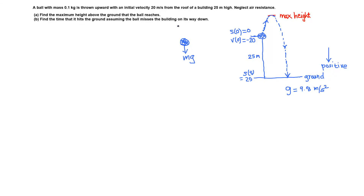Read the question carefully. Here is the situation: a ball with mass 0.1 kilogram is being thrown vertically upward. When it returns, it misses the building and lands on the ground. In this question, we are assuming the downward convention — going downward is positive — so acceleration due to gravity g is positive because it acts downward. Therefore g equals 9.8 meters per second squared.